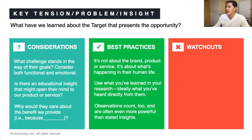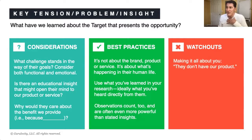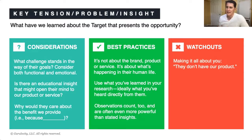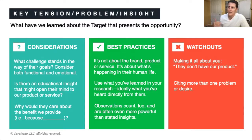Watch-outs — things to look out for or problems that people often run into here. One is making it about you. Insights don't have our product in them. Them not having your product or service today is not an insight and it's not the problem — you want to get at something else. Another watch-out is citing more than one problem. The problem with citing multiple insights is it takes you to multiple benefits and multiple responses, leading to work that isn't single-minded and might have too many or conflicting takeaways. Usually you want to hone in on one primary insight.